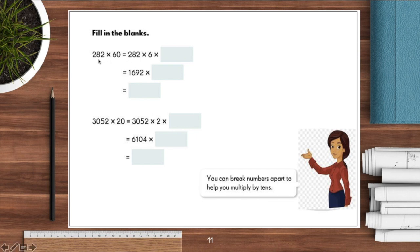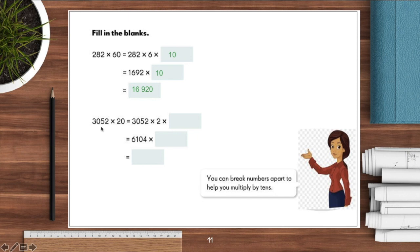Next example: 282 times 60. Using the same strategy, break 60 apart as 6 times 10, so 282 times 6 times 10. Getting the product of 282 and 6, then multiplying by 10, gives 16,920. Lastly, 3052 times 20 — breaking down 20 as 2 times 10, we get 3052 times 2 equals 6104, then times 10, giving a final answer of 61,040.